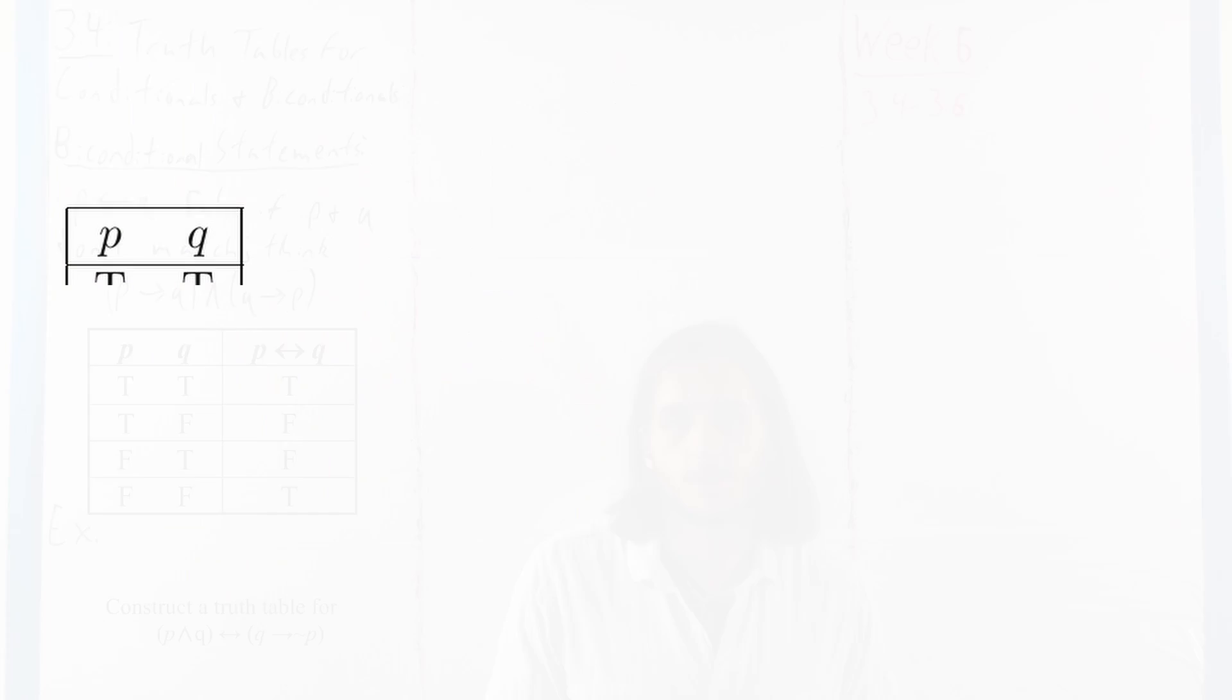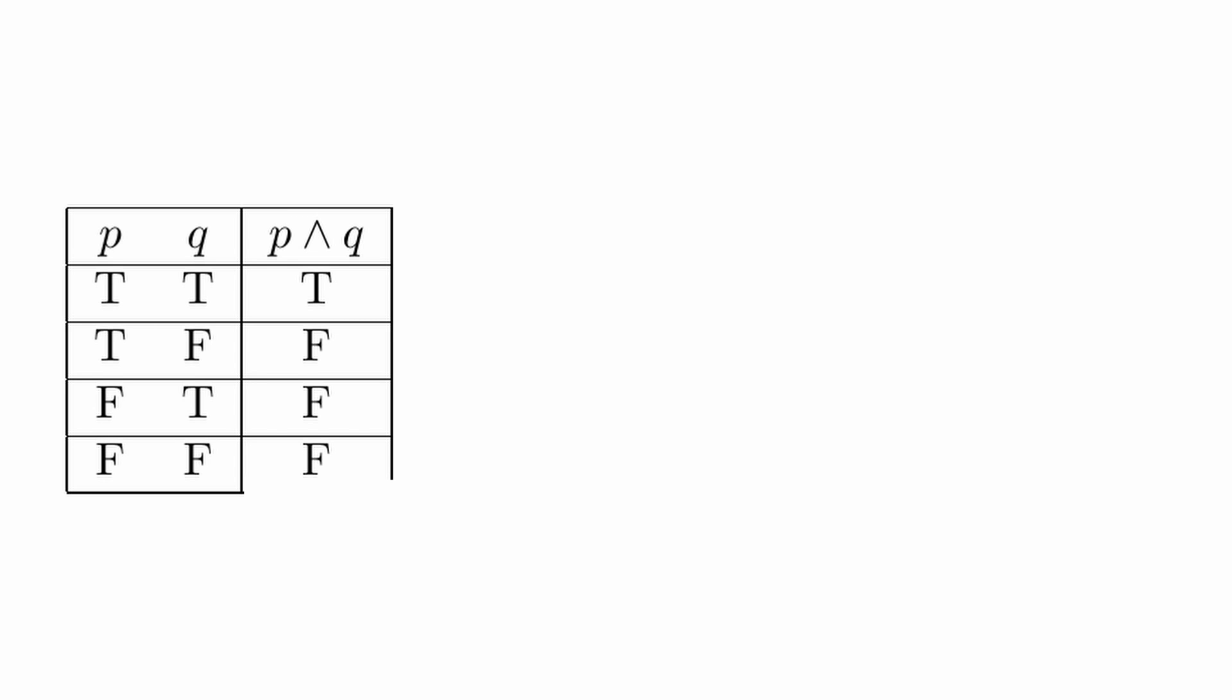So first, we're going to start with the two simple statements this is built from, p and q, where we have our four cases like usual. Then because it's the first part we have there, I'm going to make the conjunction p and q, which, as we saw in the last section, is true only when both are true, so just in that first case.